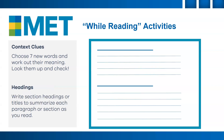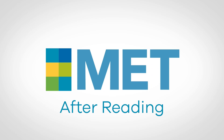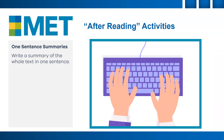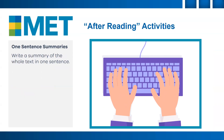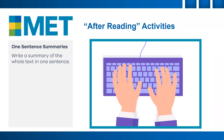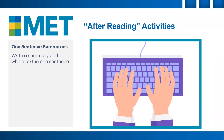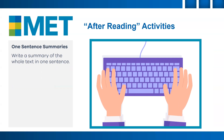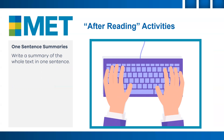Headings — write section headings or titles to summarize each paragraph or section of the text as you read. After reading: One-sentence summaries — write a summary of the whole text in one sentence. Challenge yourself further and make it a five-word sentence.